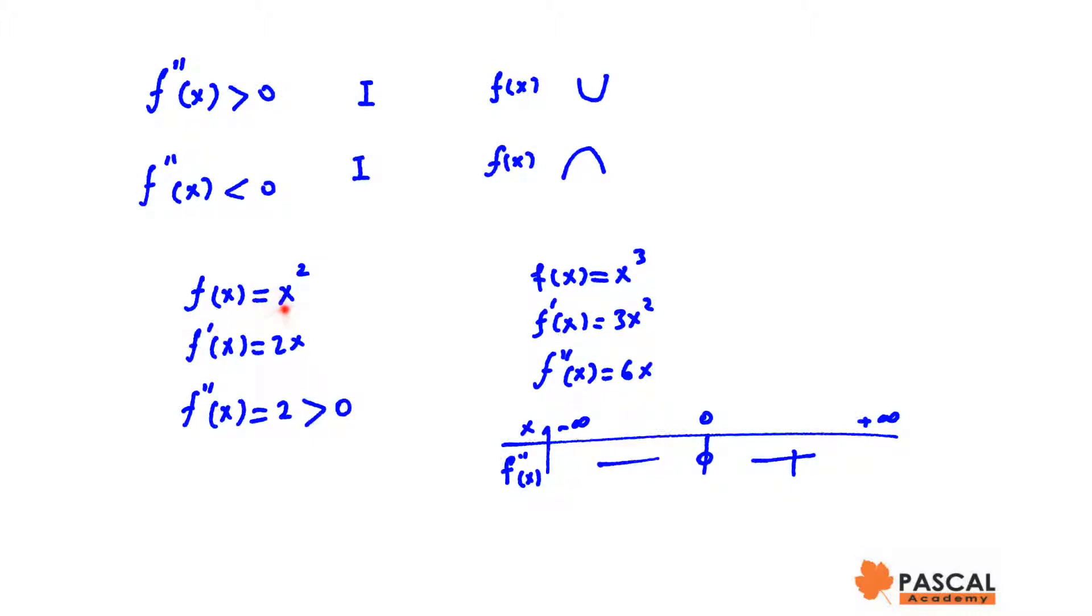Let's look at f of x equals x². The second derivative is 2. It is always positive. Therefore, f of x equals x² is always concave up.